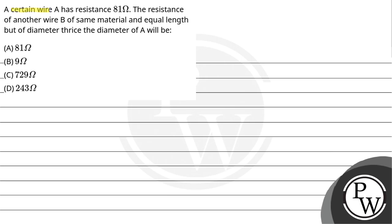Let's read the question. A certain wire A has resistance 81 ohm. The resistance of another wire B of same material and equal length but of diameter thrice the diameter of A will be: